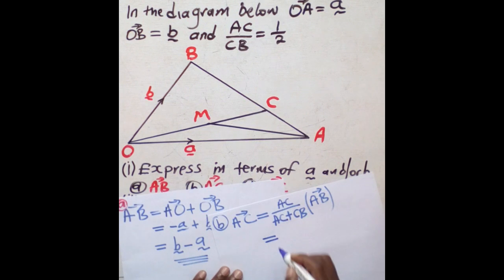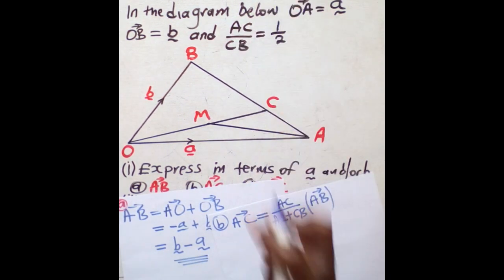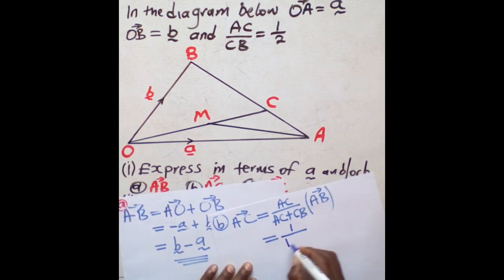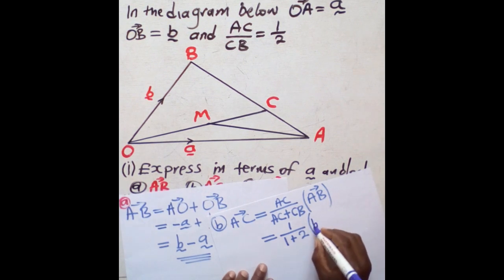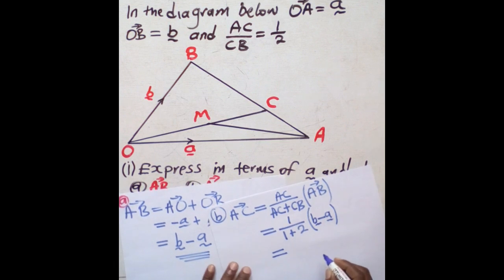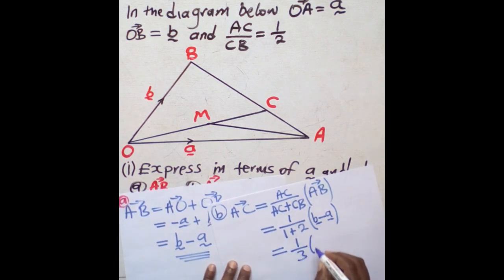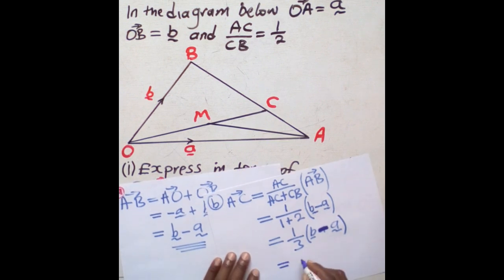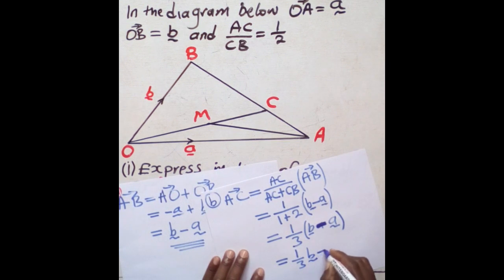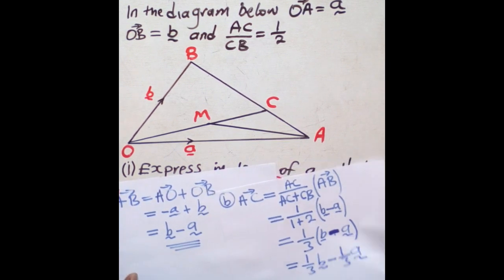We say this is now going to be equal to: AC corresponds to 1, so we put 1 over (1 + 2), then times vector AB. AC is 1 and CB is 2, so 1 plus 2 gives 3. Then times vector AB which is b minus a. Do not forget the dashes to show that you are dealing with vectors. So this is equal to 1 over 3 times (b minus a), which gives 1/3 b minus 1/3 a. This is the answer for AC.